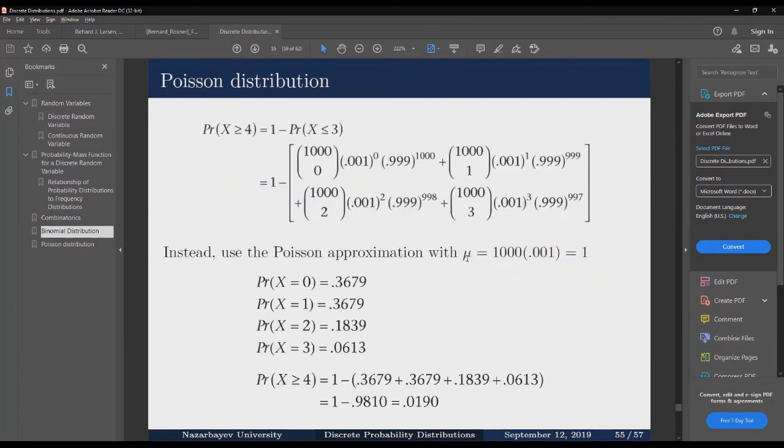Why should mu be n multiplied by p? We want our Poisson distribution and binomial distribution to have the same expected value.